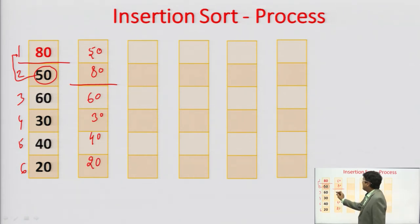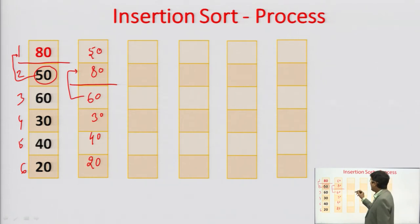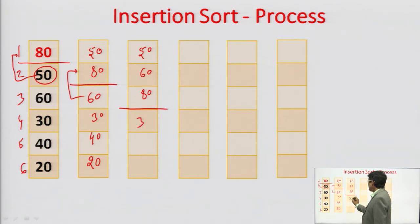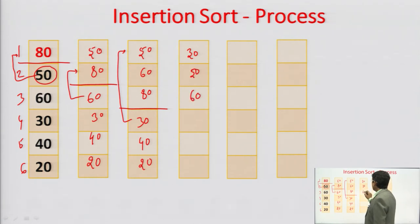We pick another element from the unsorted part and insert it into the sorted part. So 60 comes at the place of 80, and 80 shifts one step down. After this, the sorted part contains 50, 60, and 80, and the unsorted part contains 30, 40, and 20. Next, 30 is inserted — it goes into its correct position, elements are shifted down, and the sorted array now contains 4 elements while unsorted contains 2.